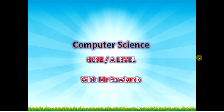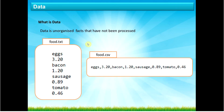Hi guys, Mr. Rowlands here. Welcome back to another tutorial. Today we are going to be looking at theory, starting off with data types. The first thing I wanted to introduce was: what is data? Data is organized facts that have not been processed. The best example is if you have a CSV file or a text file — that is unorganized data. There's a text file separated by new lines and a CSV file separated by commas. At the moment that information is just a list — we don't know what it's for.